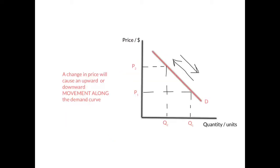The law of demand explains movements along the demand curve. A change in price will cause an upward or downward movement along the demand curve — a change in quantity demanded. As you can see, when price rose from P1 to P2, this led to a fall in quantity from Q1 to Q2; quantity demanded has fallen, causing an upward movement along the demand curve.